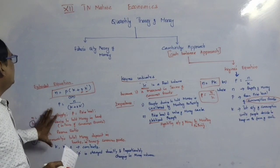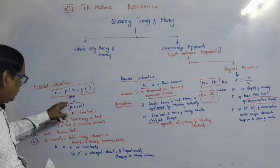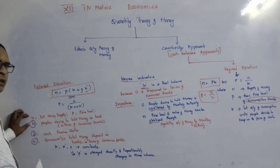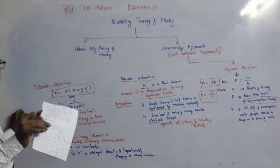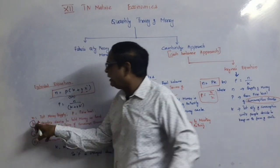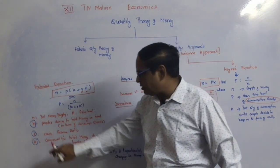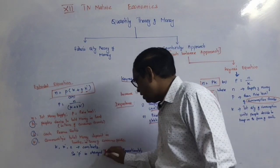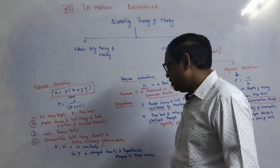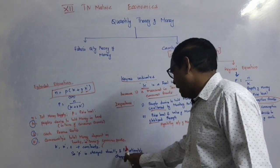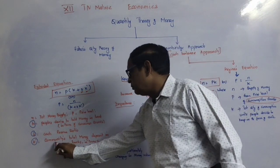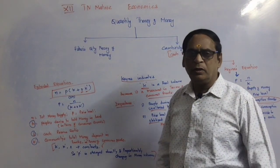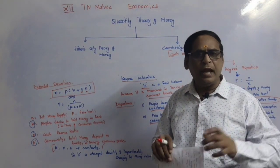From the formula, price level P equals N divided by K plus RK1. K is people's desire to hold money in terms of consumer goods, R is the cash reserve ratio, and K1 is the community's total money deposit in banks. P changes directly and proportionately with changes in money volume N. This gives us the quantity theory of money and its relation to the value of money.